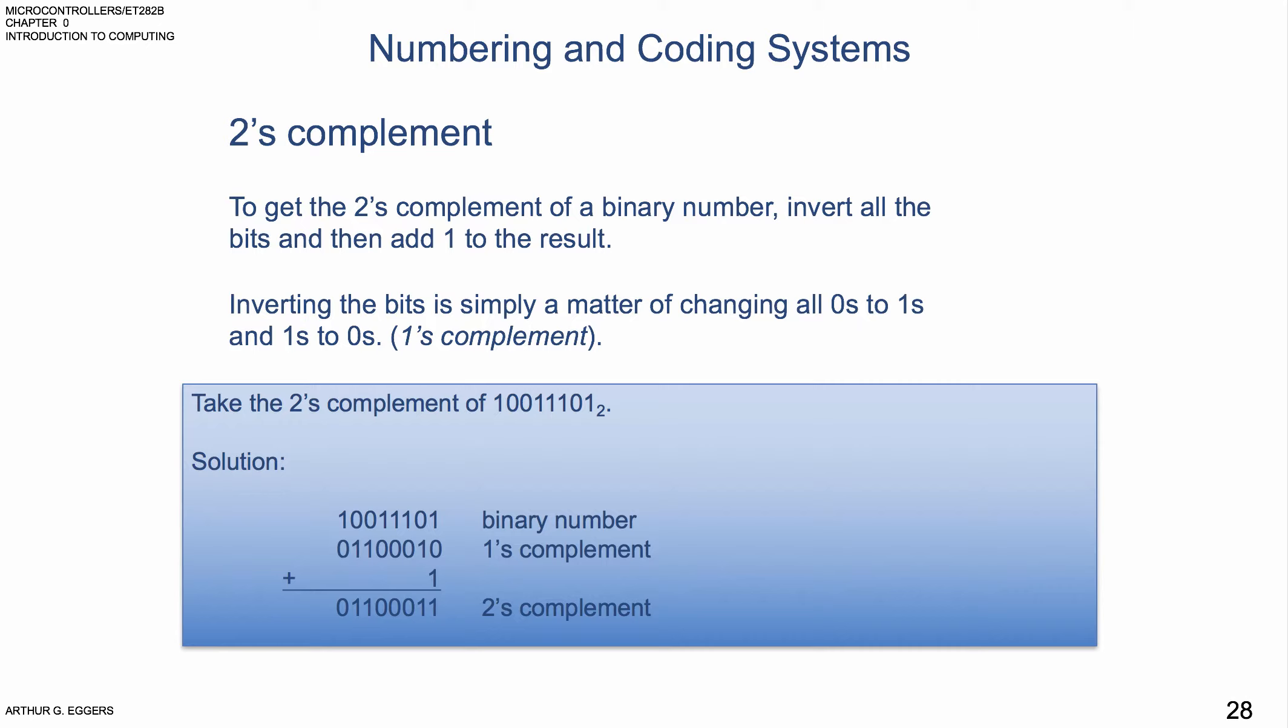If we see this here, we've got a value that we want to first do a complement on. To get the 2's complement of the binary number, we're going to invert all the bits and then add 1 to the result. The first step is actually to do a 1's complement. We're going to take the original value 10011101 and do a 1's complement on it, changing all the 1's to 0's, all the 0's to 1's. Then we're going to add 1 to the 1's complement, which then becomes the 2's complement.